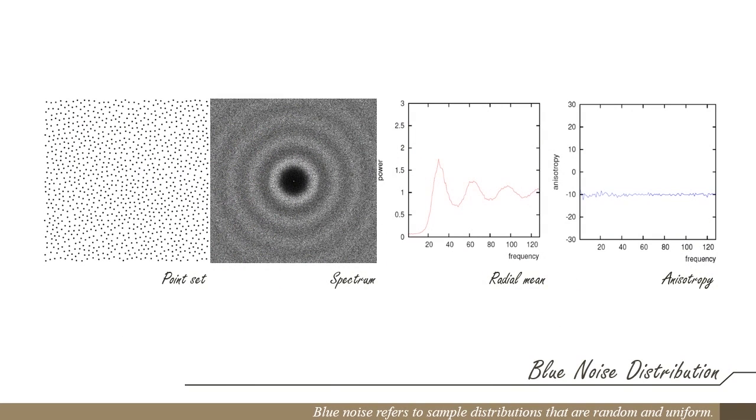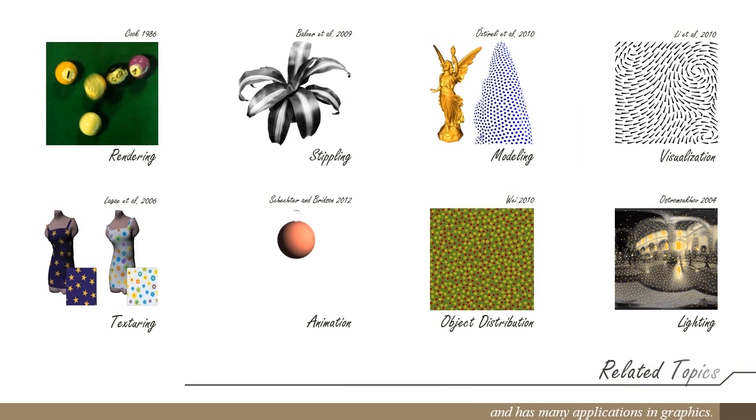Blue noise refers to sample distributions that are random and uniform. It has low noise and low aliasing, and has many applications in graphics such as rendering, stippling, modeling, and visualization.